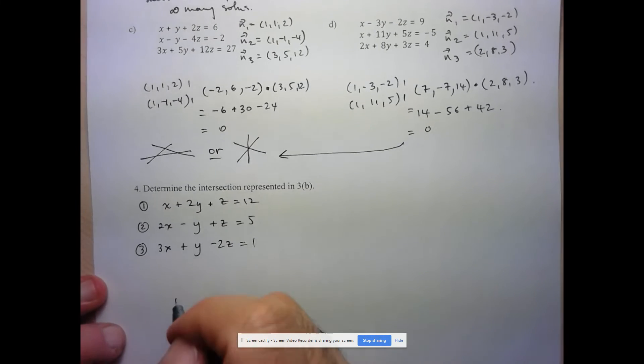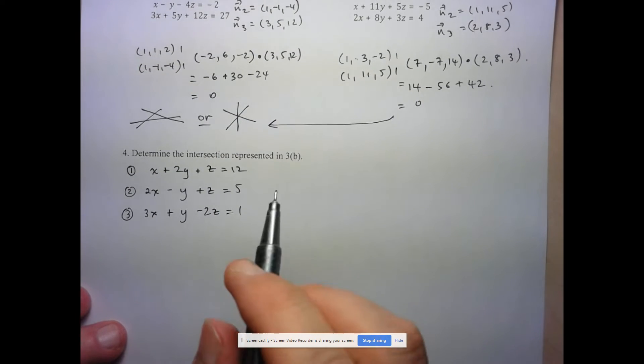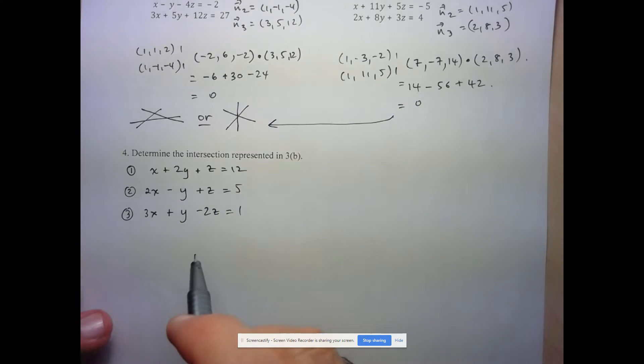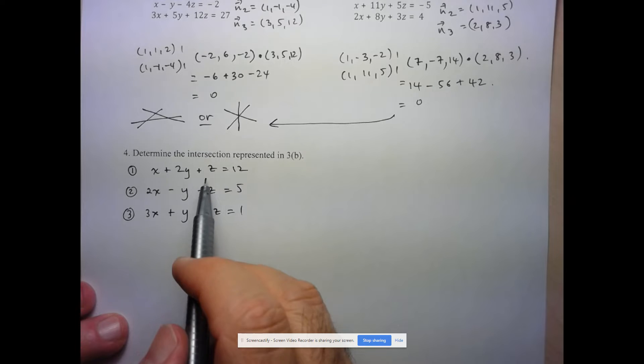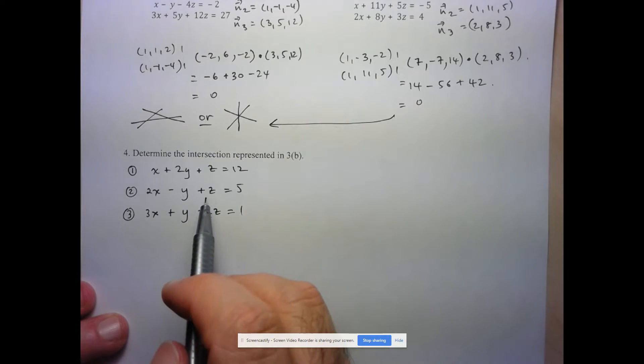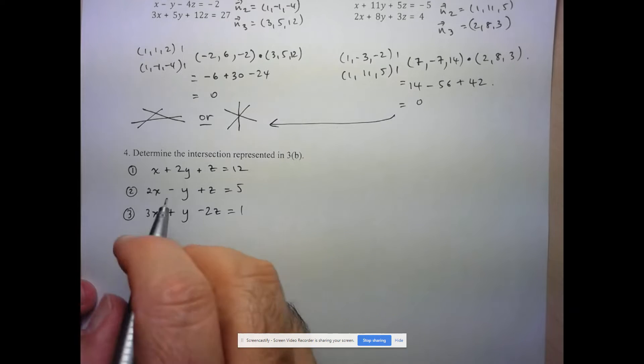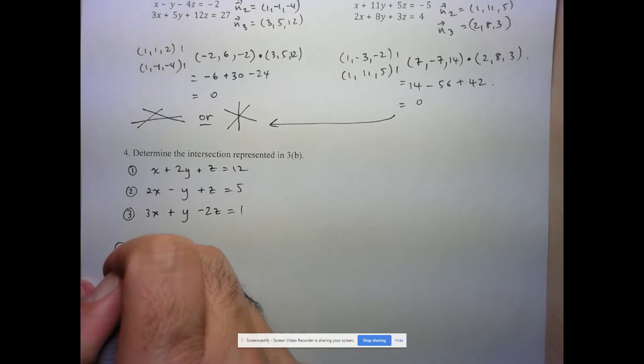All right, so how do we go from here? Well, why don't we do what we did when we were solving two planes, the intersection of two planes. We try to eliminate a variable. So that's what I'm going to do. It looks like the easiest one to eliminate is z in equations 1 and 2. At this point I can only work with one equation at a time. So I'm going to take equation 1 and subtract equation 2.